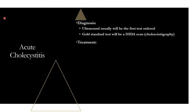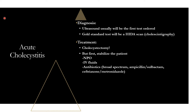As for treatment, the ultimate goal is cholecystectomy. But these patients are more sick, so you don't immediately send them to the OR — you need to stabilize them first. They have an infection and are in pain, so keep them NPO, give IV fluids, and give broad-spectrum antibiotics to cover gram-negative and anaerobic organisms. Options include ampicillin-sulbactam, ceftriaxone plus metronidazole for anaerobic coverage, or ertapenem. Once the patient is afebrile for about 48 hours and stable, you can proceed with cholecystectomy.